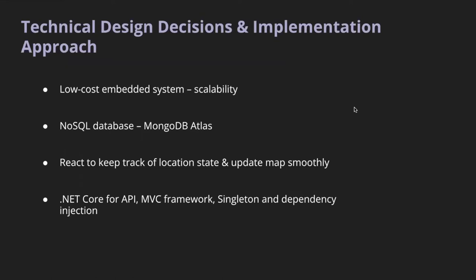For the technical side, we wanted to use a low-cost embedded system as Ana talked about earlier. We went with Arduino because the system doesn't really require powerful modules, and Arduino is simple and cheap. We also needed to duplicate the system for each golf cart, so it's scalable. For the API system, we didn't really need to store a lot of data on the database — just the datetime and the ID for each golf cart. So we didn't need a relational database and went with MongoDB Atlas, a NoSQL database.